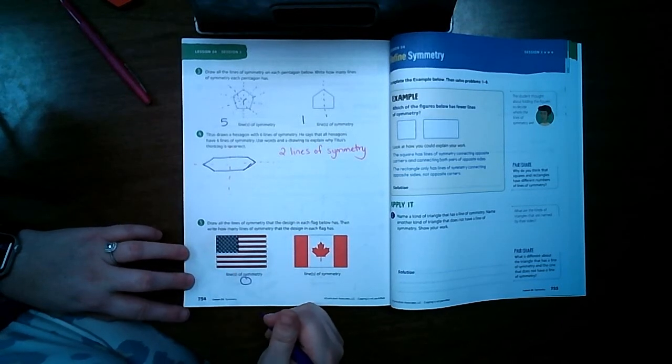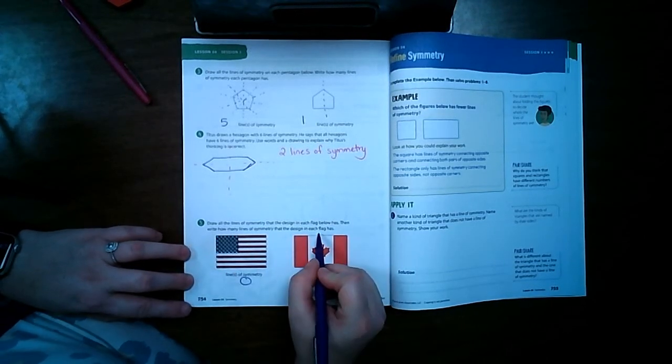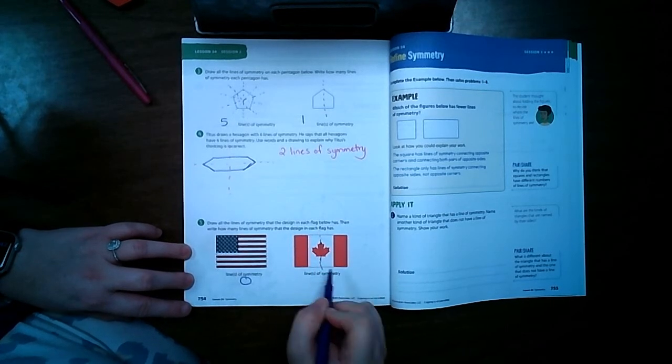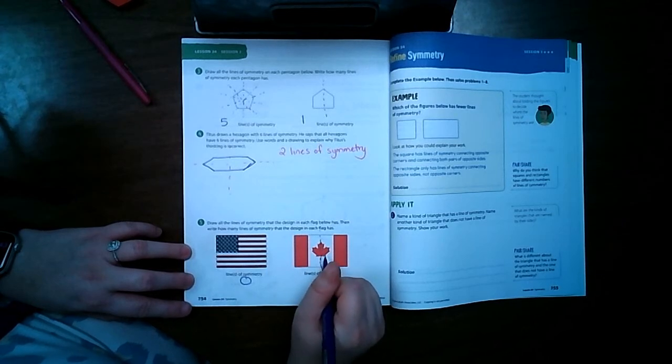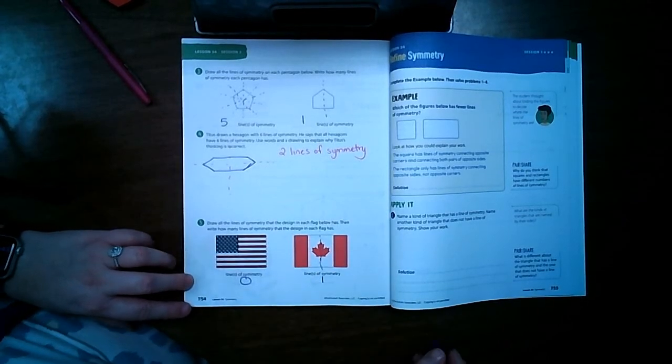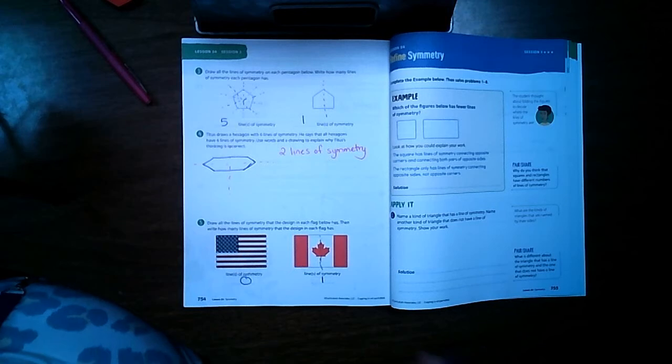So the Canadian flag we can go right down the middle. We can't go that way because that's bigger than this down here, so it only has one line of symmetry.